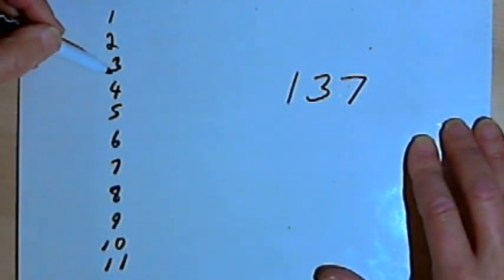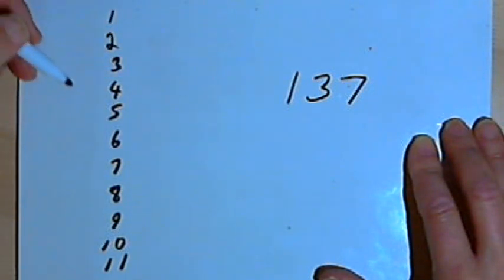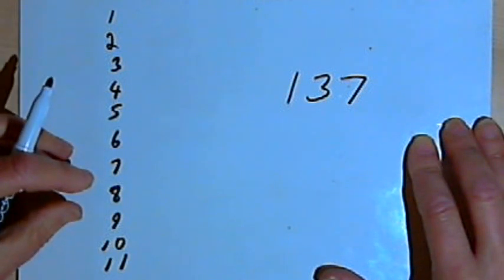And I could try dividing each of these numbers into 137 to see if it's a factor. Now that's gonna be a lot of work, so let's see if I can trim the list down. First of all, I'm not gonna bother with 1, because 1 can divide into any number.